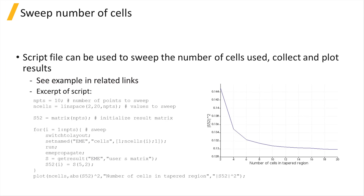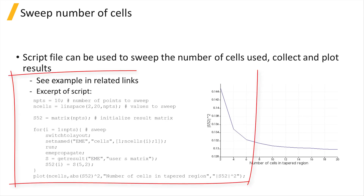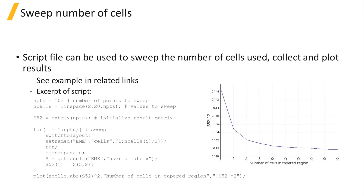For example, here is the absolute value squared of S52 from the polarization converter structure that we looked at in the previous unit, plotted against the number of cells used in the taper region of the device. The script file used to perform the sweep and plot the results can be found in the page linked below this video.